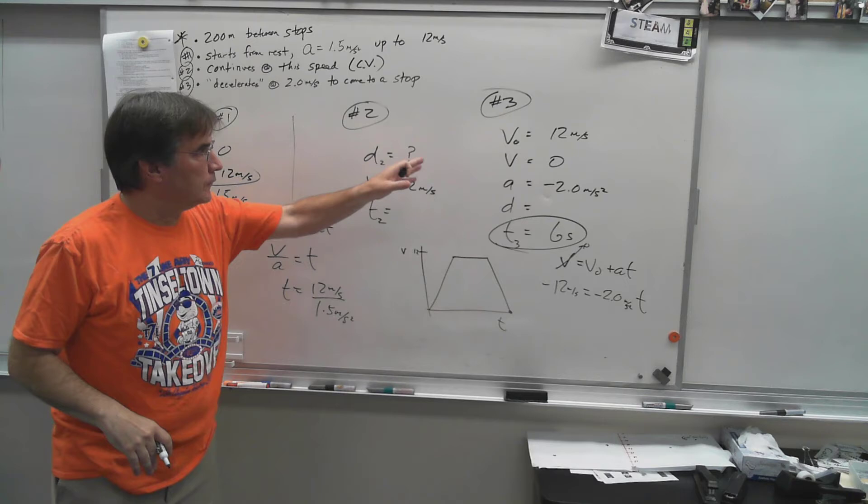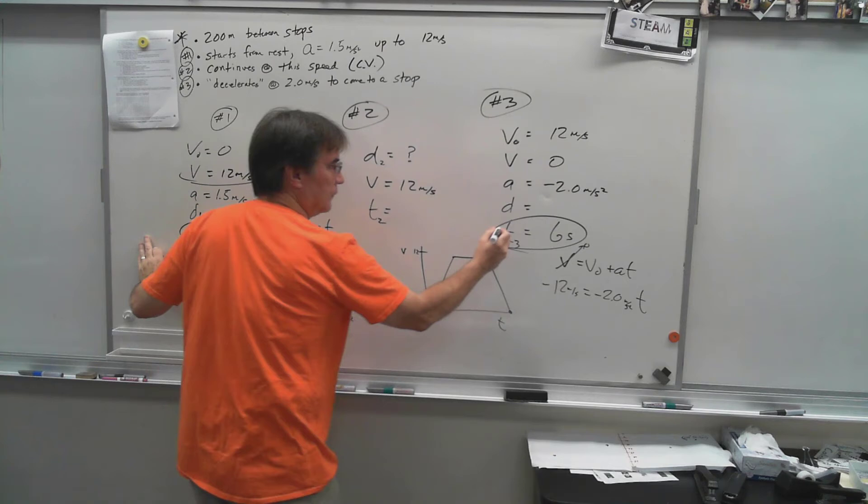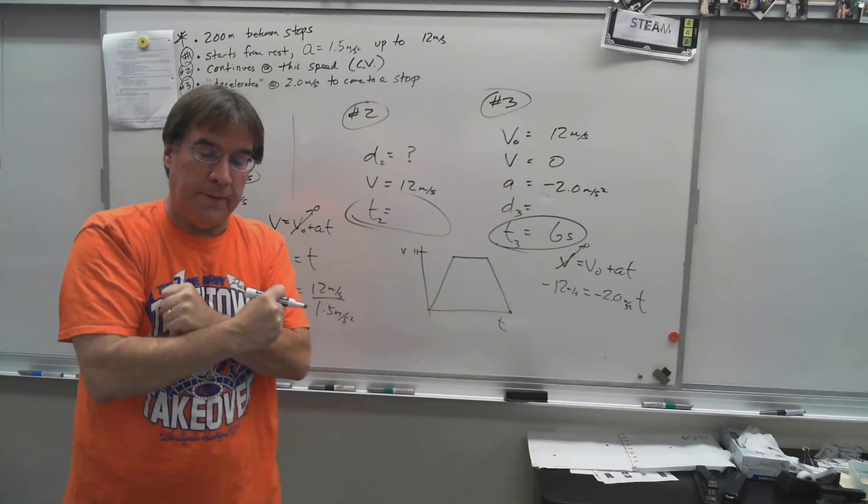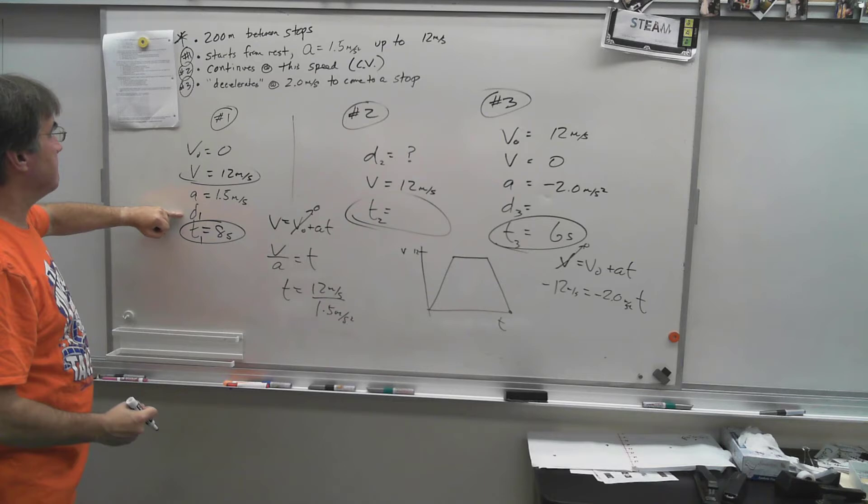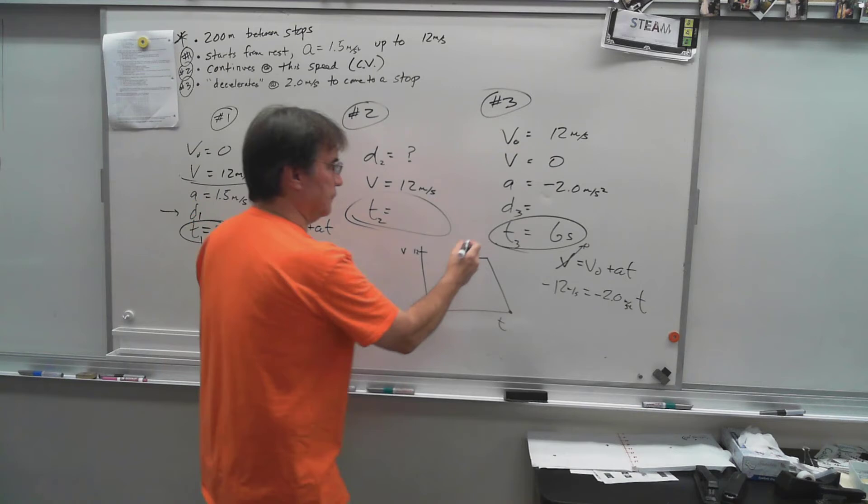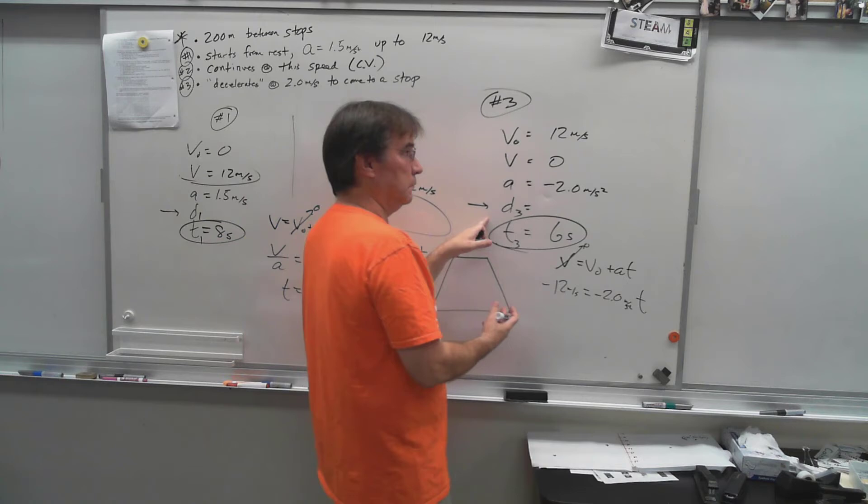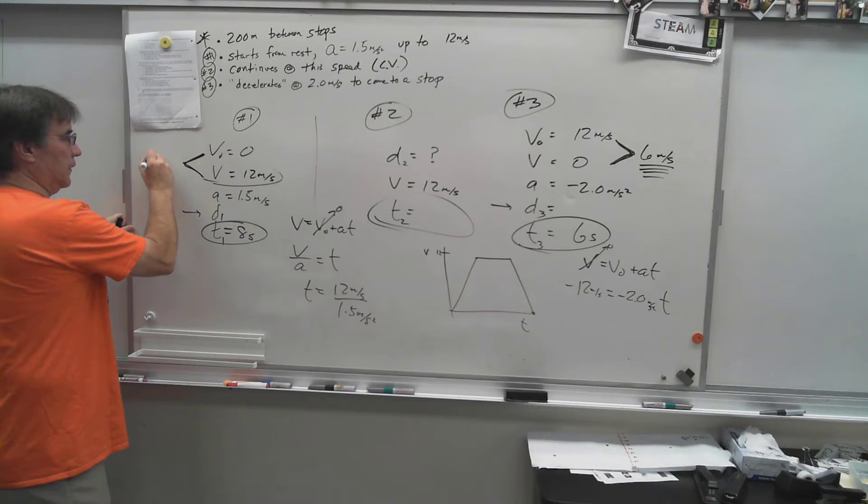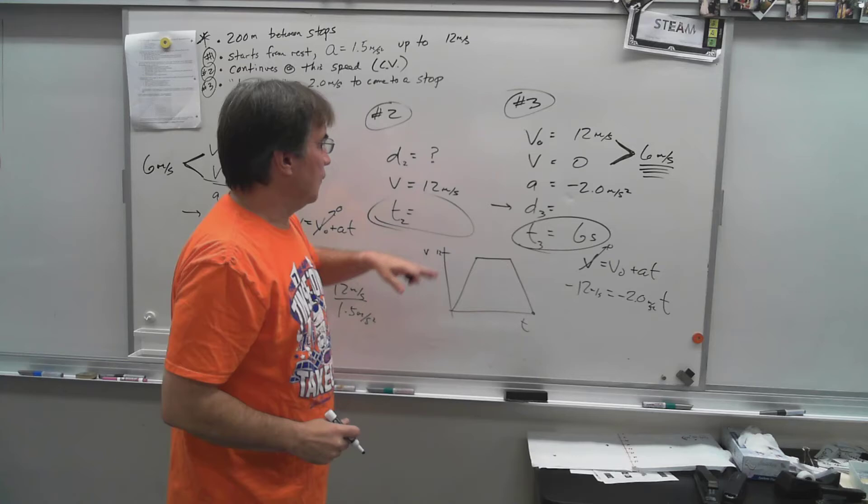There's one piece of info we haven't used. It's 200 meters between stops. All this motion takes place over 200 meters. You had some d1, some d2, and some d3, and I can use this to figure out that unknown d2. And if I can get d2, I can get t2 and then I'm done. So figure out your d1. You've got enough info here to go get d1, you've got enough info here to get d3.